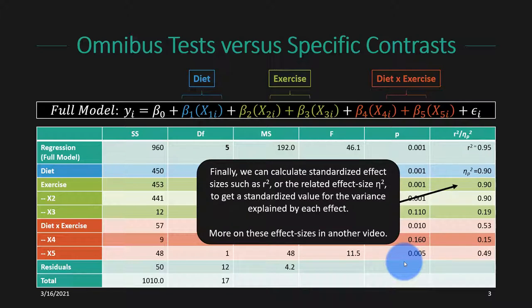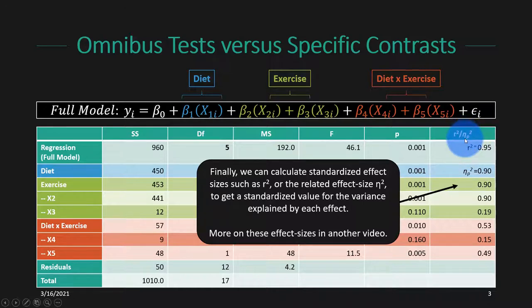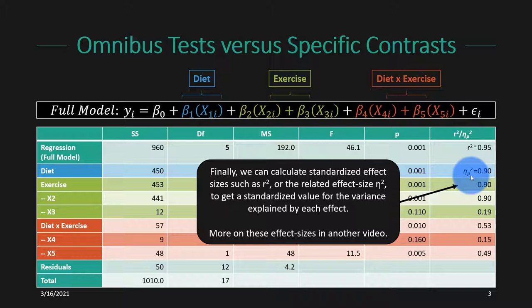Let's focus on the far right-hand column of our analysis of variance table. After we have everything in place, we can calculate standardized effect sizes such as r-squared — also often called eta-squared in the ANOVA context. The omnibus r-squared or eta-squared is calculated from the full model. The other effect sizes below are called partial eta-squareds, which are very common in many stats programs.